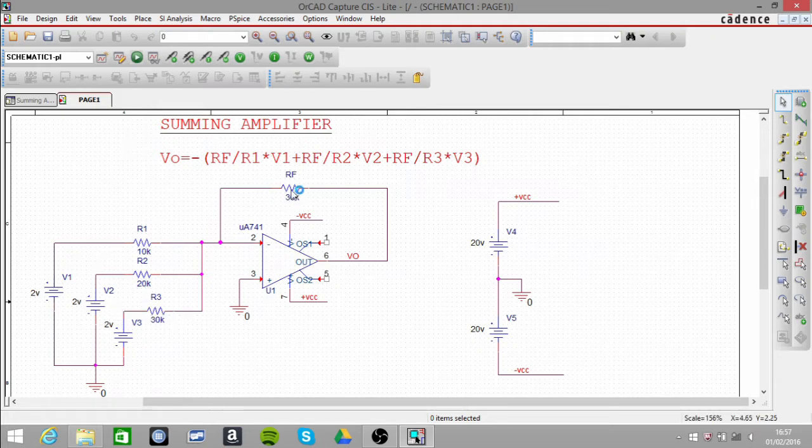So the way it works is that we have here our RF, and that's over R1. So this is the gain, which is 3, and that's multiplied by our first input voltage, which is 2V. So that gives us 6V.